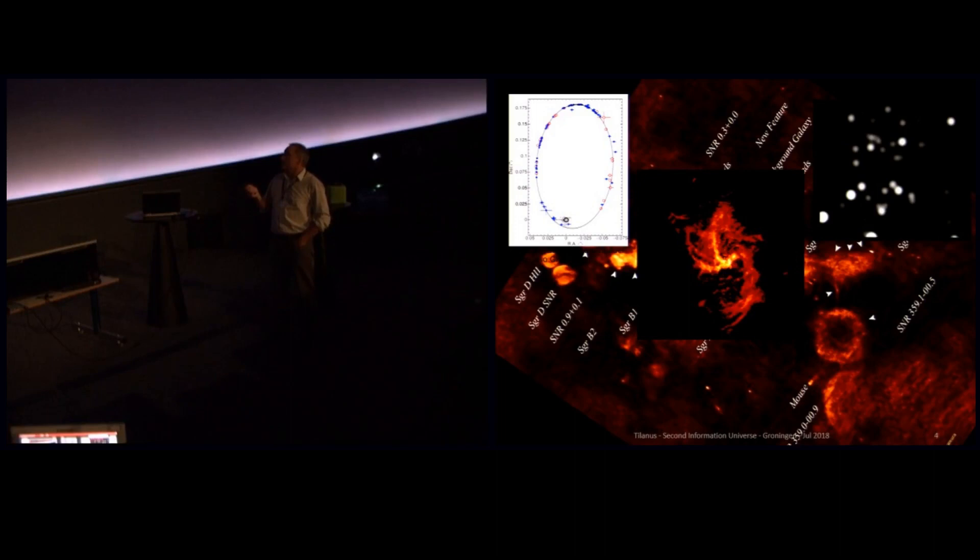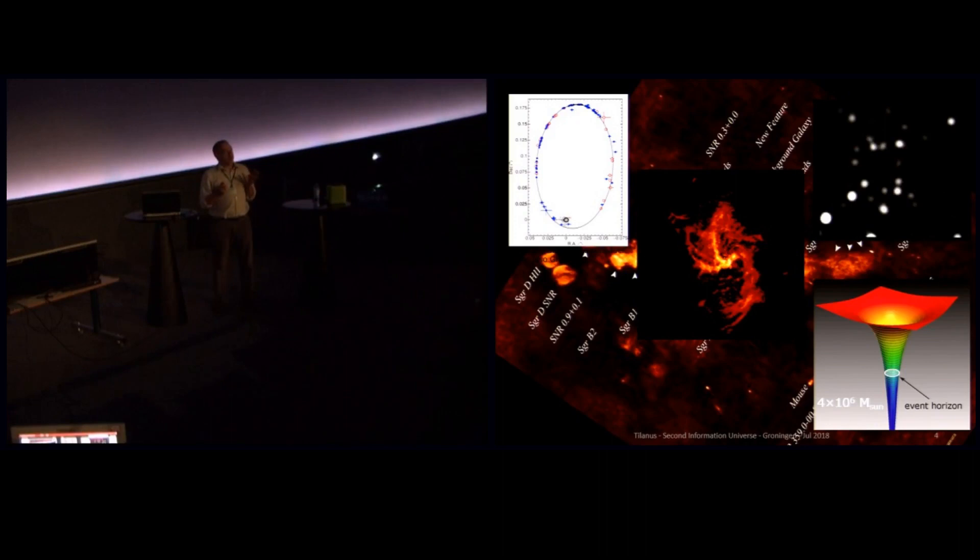So this distance, this distance of closest approach is about the solar system. It's about the distance of Pluto to the sun. So it gets incredibly close to the black hole. And from that we can actually calculate the mass of the black hole and it turns out that well inside that orbit there is a mass of about four million solar masses. And most of that, we think, is in the black hole.